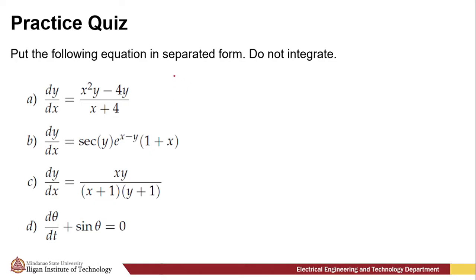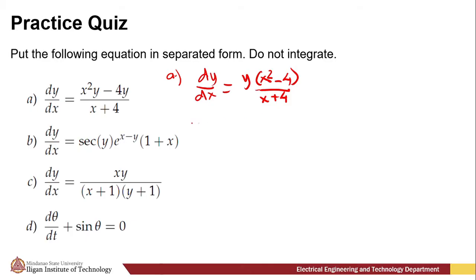For letter A, we have dy/dx equals — factoring out y — y times (x² - 4)/(x + 4). Then separating, this becomes: dy/y equals (x² - 4)/(x + 4) dx.